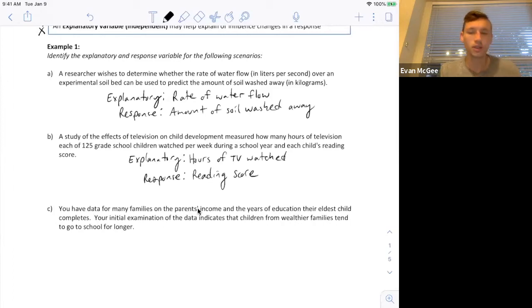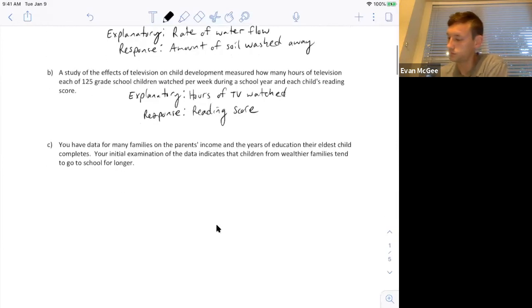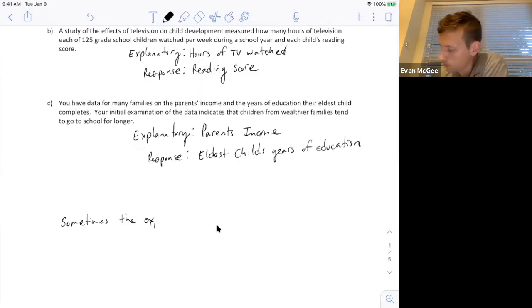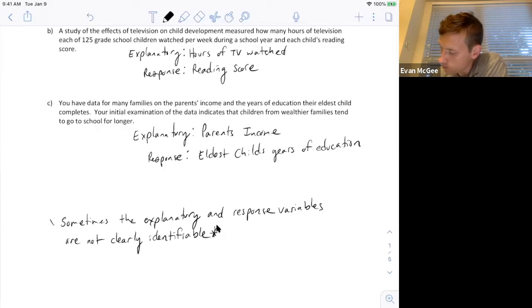So their parents' income explains how long their children have gone to school.